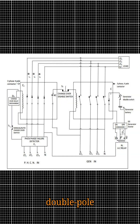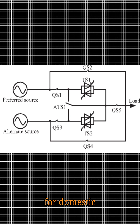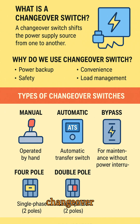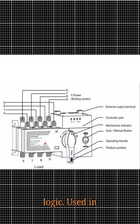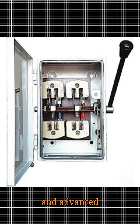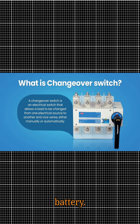5. Double-pole changeover switch — for single-phase supply with two poles: live and neutral. Common for domestic and small office use. 6. Hybrid and smart changeover switch — a modern type with digital controllers, Wi-Fi monitoring, or programmable logic. Used in smart homes and advanced energy systems involving solar, grid, and battery.